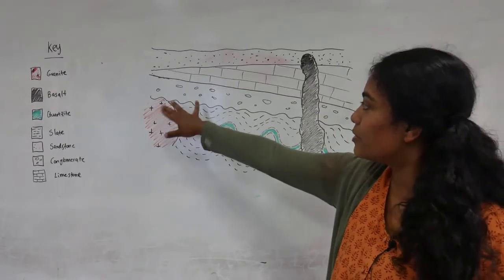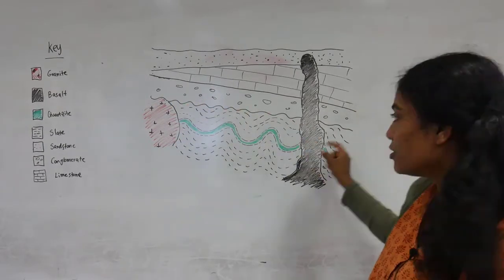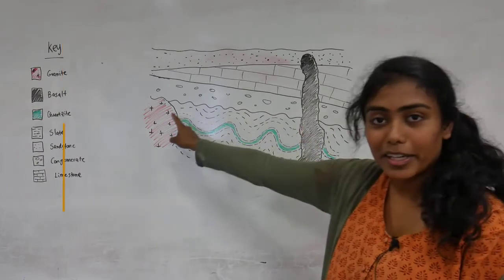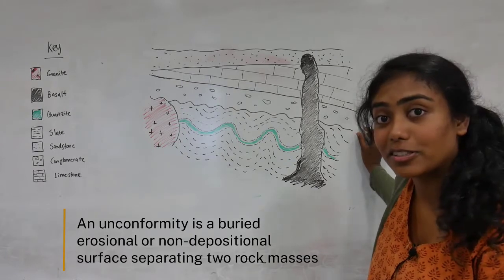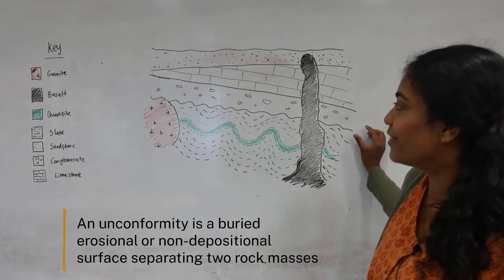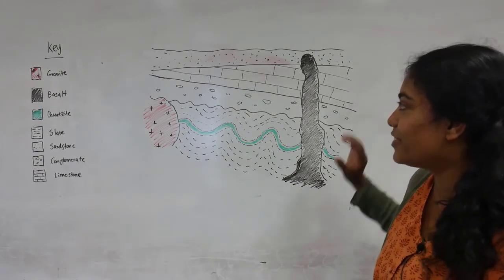Then all of this would have been eroded to create this unconformity here. So this represents a gap in time where we have rocks being lost from the geological record.